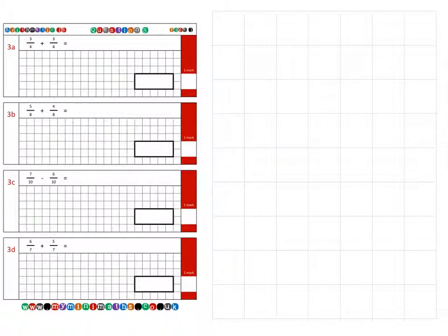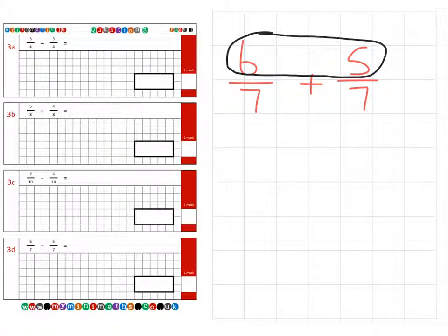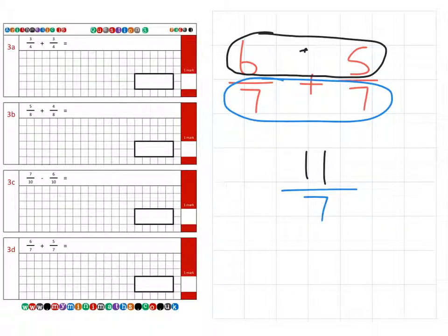And on to today's final question, which is 6 sevenths. And we're adding 5 sevenths. So another way of looking at it is we could add the numerators. So 6 add 5 gives us 11. And then it's out of 7. So the final answer is 11 over 7, 11 sevenths.